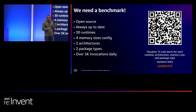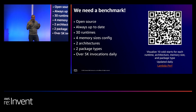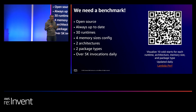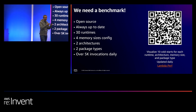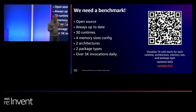I test different memory size configurations from 128 up to 1024 MB, two architectures (ARM and x86), and two package types (ZIP and OCI images). Daily it's over 5,000 invocations — I invoke every Lambda function 10 times to get a fair average. That may increase to 100 or 1,000 invocations per combination in the future, but 10 is fine for now. It deploys over 500 different Lambda function combinations. Feel free to scan the QR code to check it out.